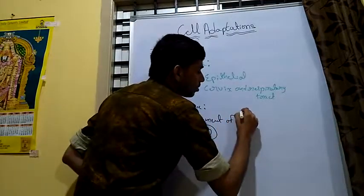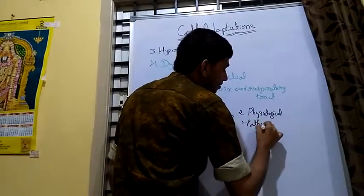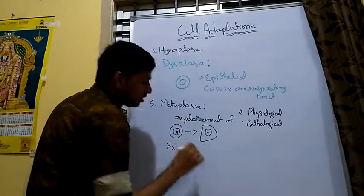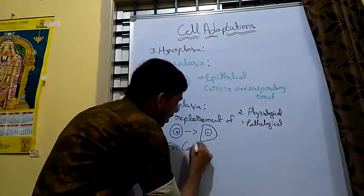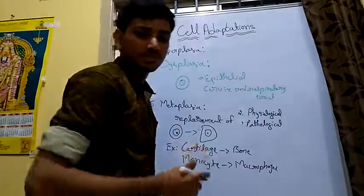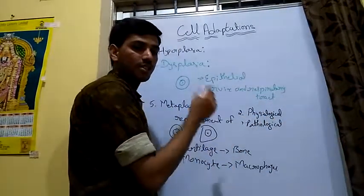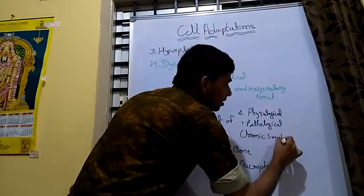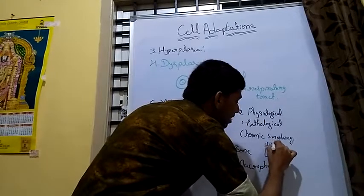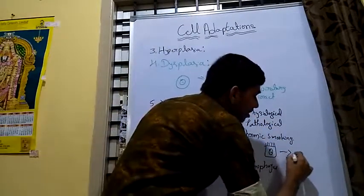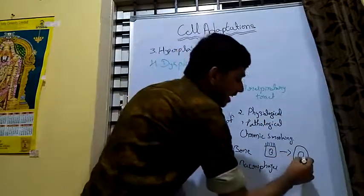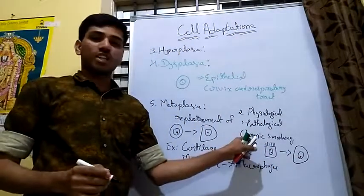Metaplasia is also of two types: physiological metaplasia and pathological metaplasia. Pathological metaplasia is an irreversible condition. In chronic smoking cases, the ciliated columnar epithelial cells of the respiratory tract are replaced by non-ciliated squamous epithelial cells. This is a pathological condition.